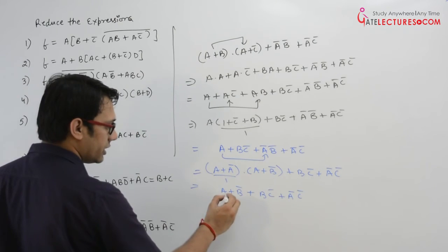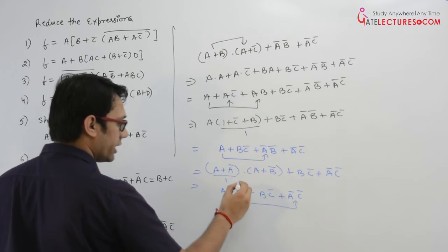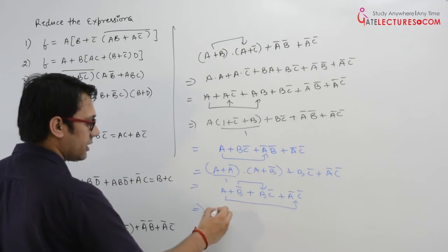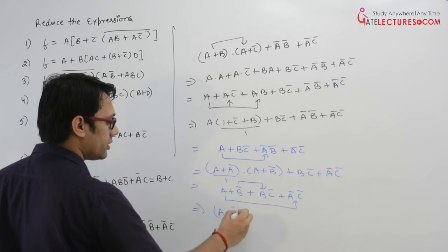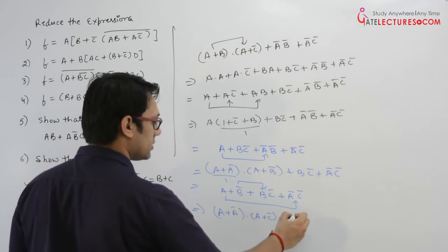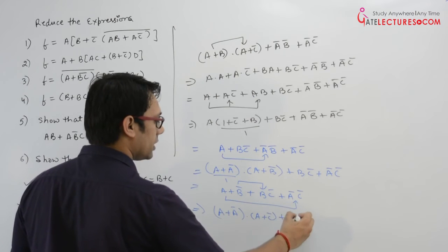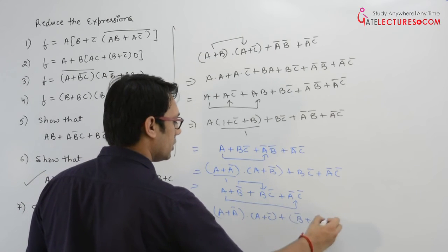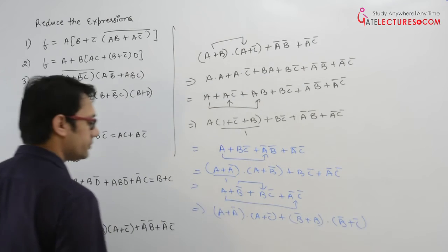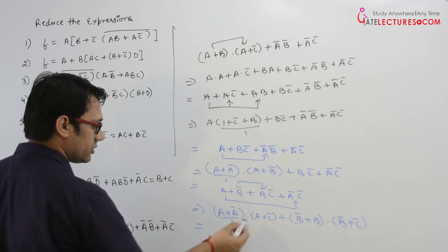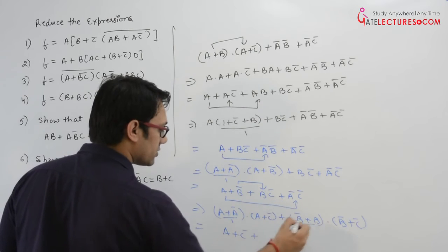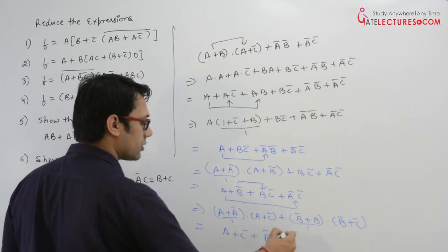Now you can distribute a over this and distribute b over this. So it can be written as (a plus a complement) dot (a plus c complement) plus b complement plus (b dot b complement) plus c complement. Further, this can be written as 1, so it is a plus c complement. This part can be written as 1, so it is b complement plus c complement.